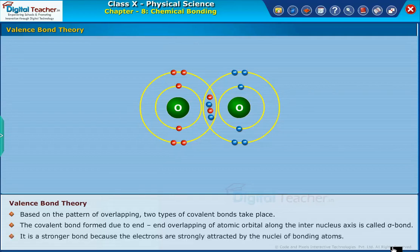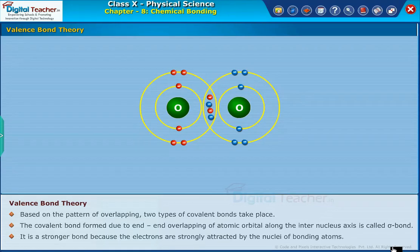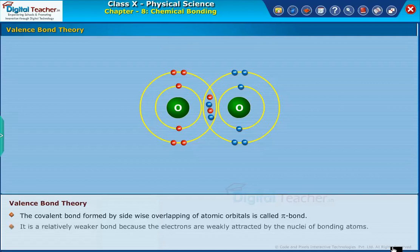The covalent bond formed by sidewise overlapping of atomic orbitals is called a pi bond. It is a relatively weaker bond because the electrons are weakly attracted by the nuclei of bonding atoms.